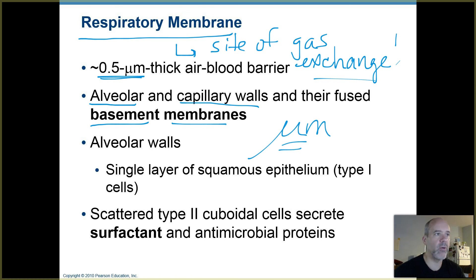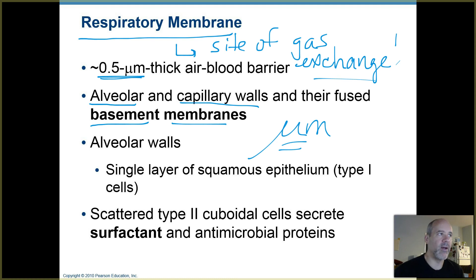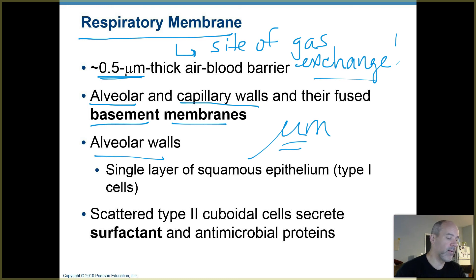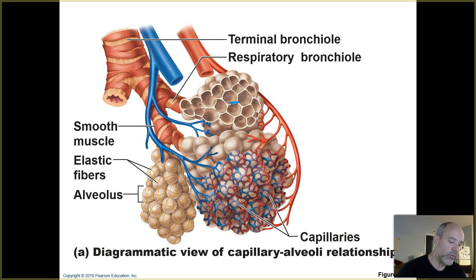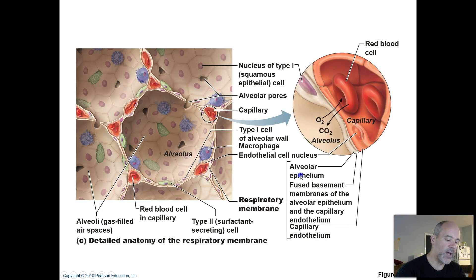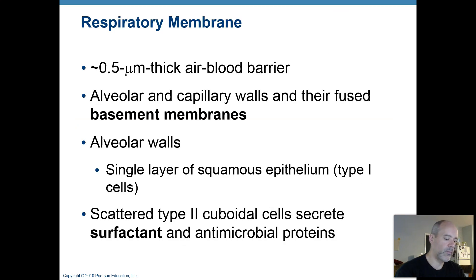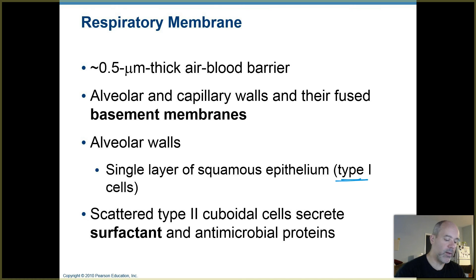That symbol stands for micro, meaning one one-millionth — so that's one one-millionth of a meter, and a meter is a little over three feet. That's tiny, tiny, tiny. To see something 0.5 micrometers thick, you need to go to the highest power on the microscopes we have in our anatomy and microbiology labs. Those walls are super thin — just a single layer of squamous epithelial cells, also called type 1 cells around the alveoli.